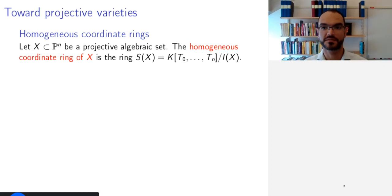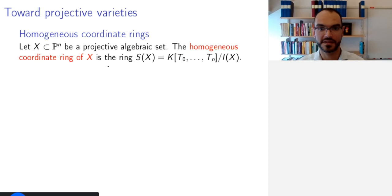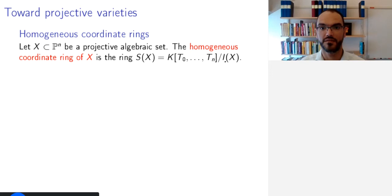Welcome to this part of the lecture. Now that we have defined projective algebraic sets, we will take the first steps towards projective varieties by defining the homogeneous coordinate ring of a projective algebraic set. So if X is such a set, the homogeneous coordinate ring of X is the ring S(X), defined as the quotient of the polynomial ring in variables T0 to Tn by the vanishing ideal of X.